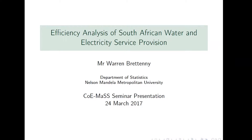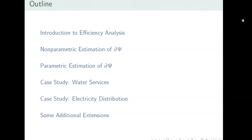A brief outline of the presentation: I'm going to introduce you to what efficiency analysis is in general. There are two main techniques of estimating the frontier — non-parametric and parametric estimation. Then we'll look at two case studies of interest: water services and electricity distribution. We've done a couple more, including universities, but those aren't included in this presentation.